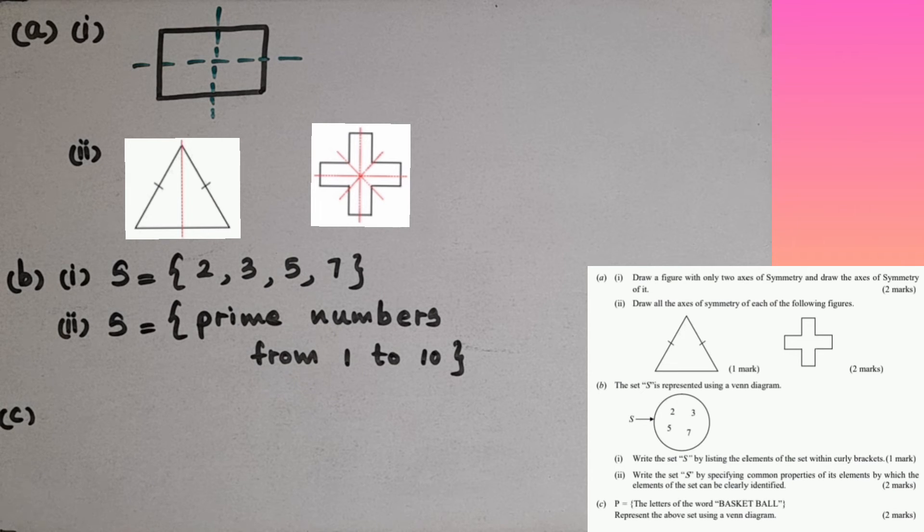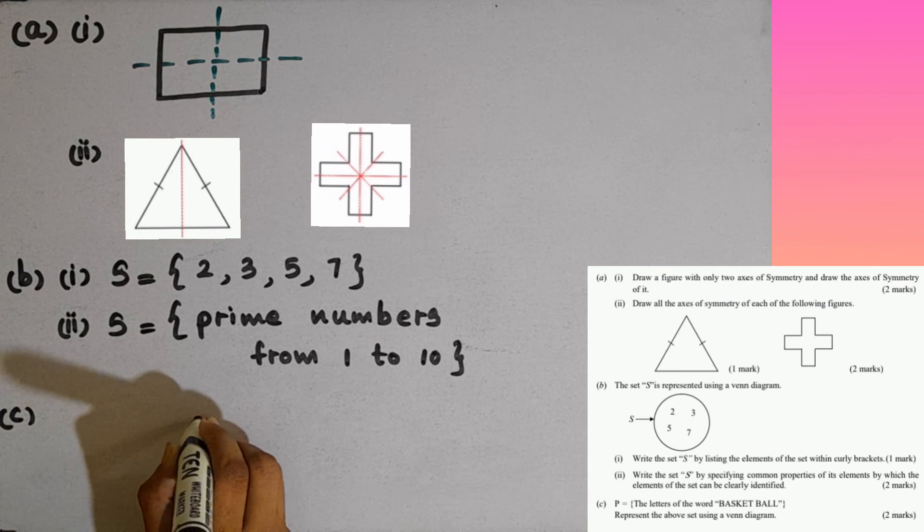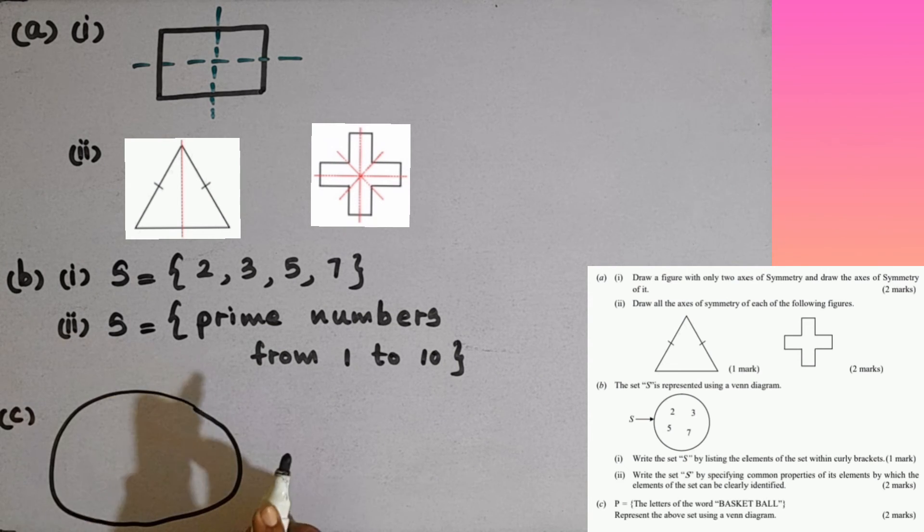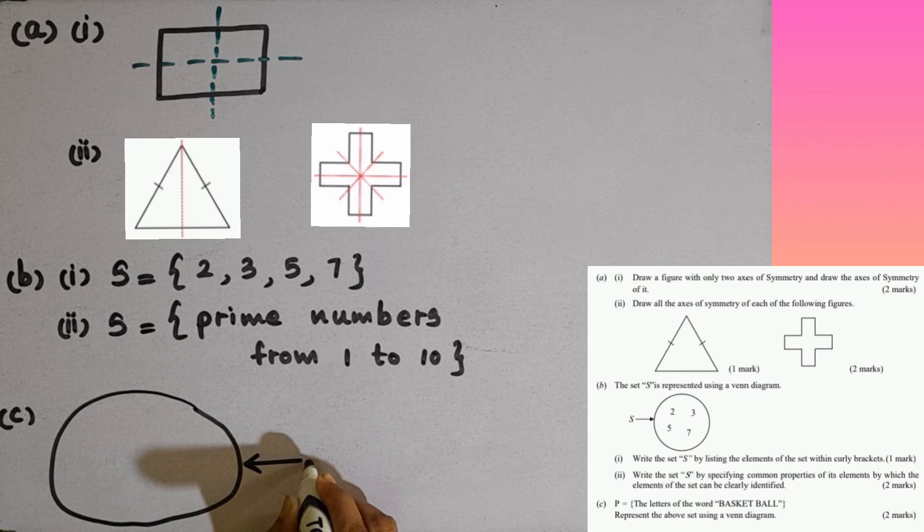You are given this P. The letters of the word basketball. P is the set of the letters of the word basketball. Represent the above set using a Venn diagram. For the Venn diagram we have to draw a closed plane figure. Then name this as capital P.